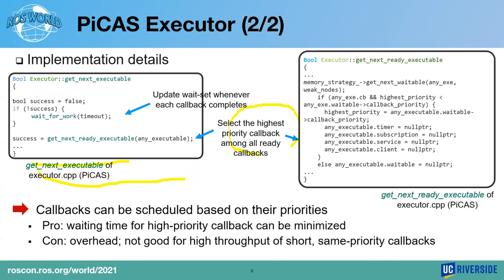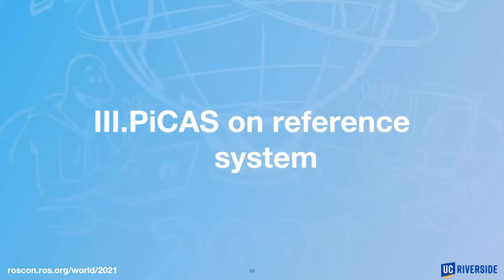With these two features, a callback can be scheduled based on its priority in the PICAS executor. The benefit of this implementation is that we can minimize the waiting time of high-priority callbacks. However, this scheduling may not be good for high throughput of short same-priority callbacks, as it raises overhead by fetching callbacks whenever a single callback completes its execution.